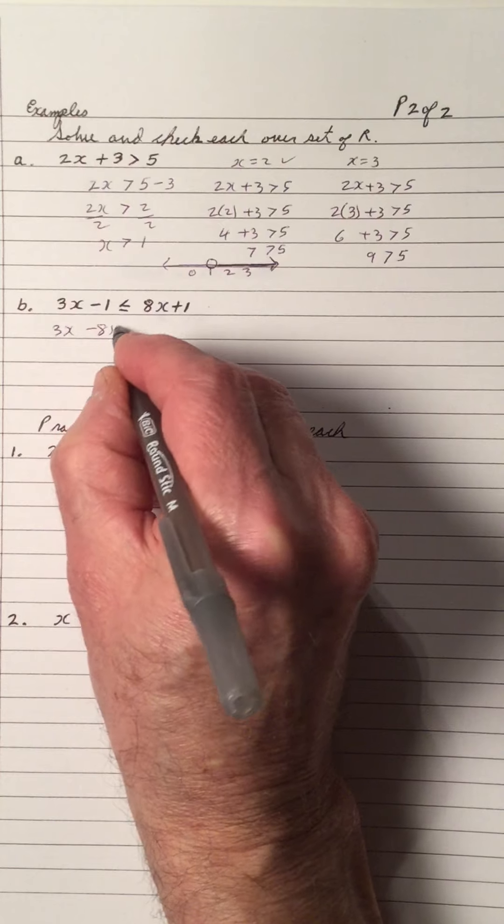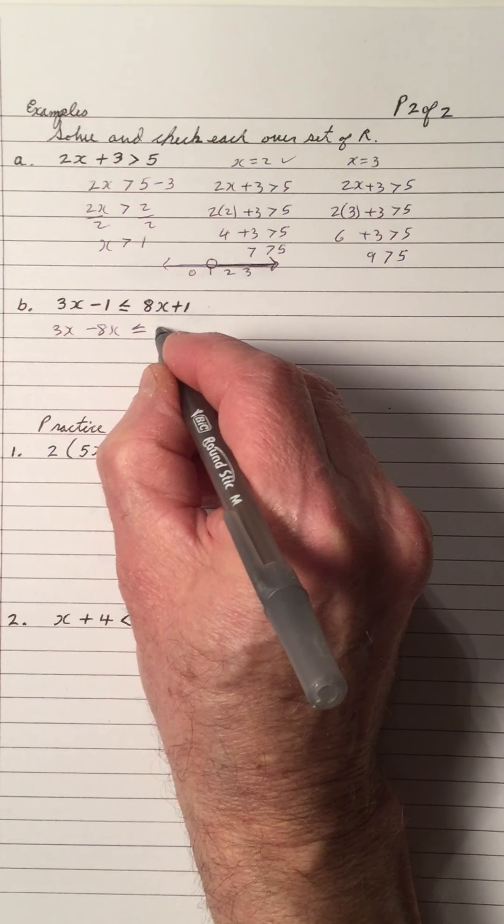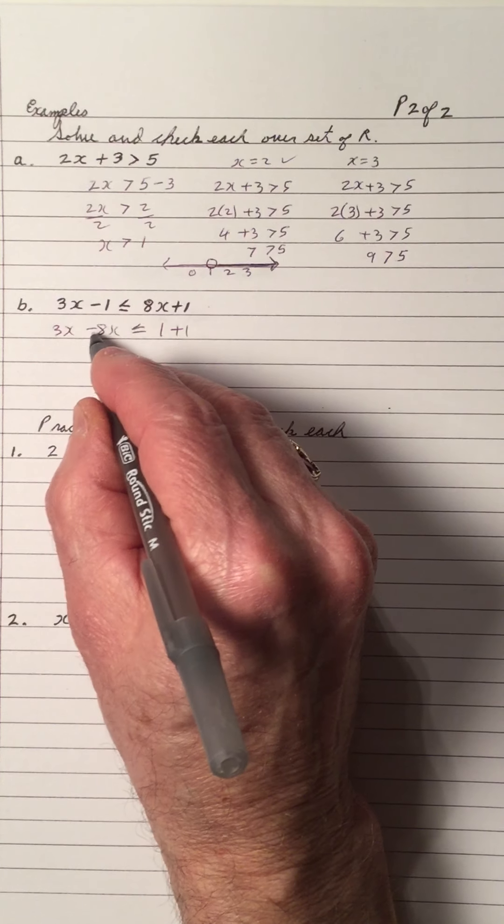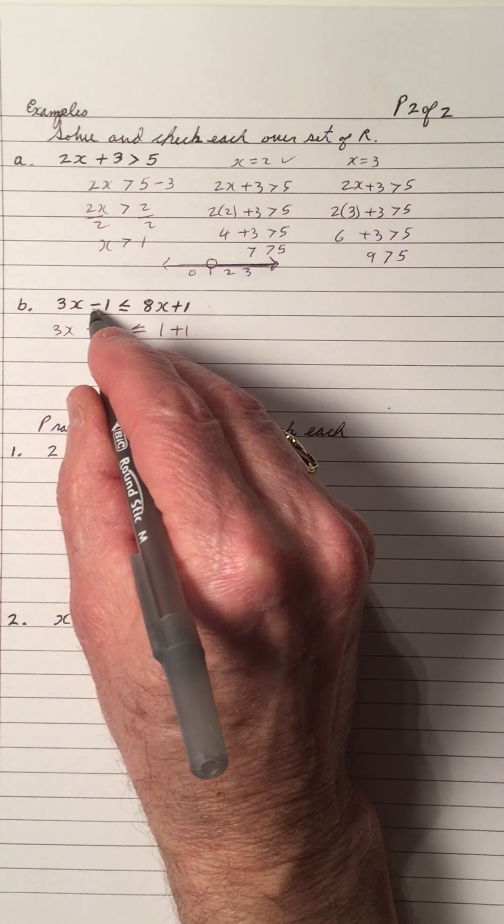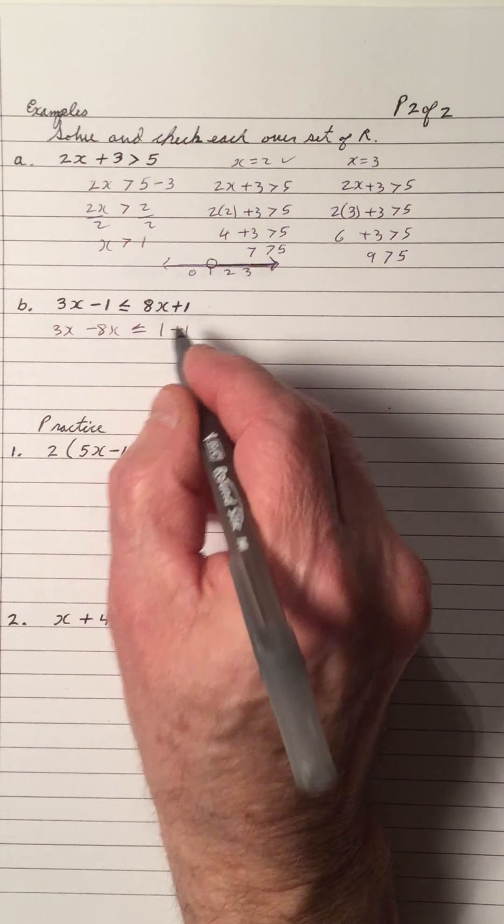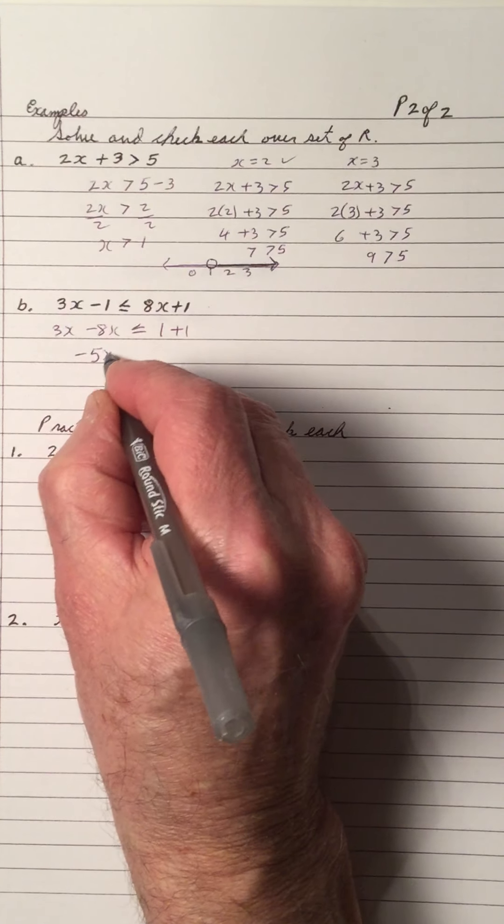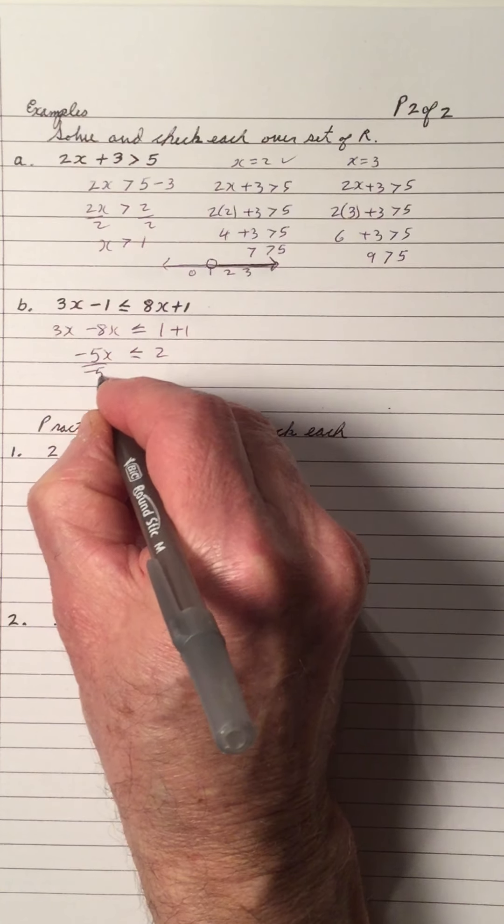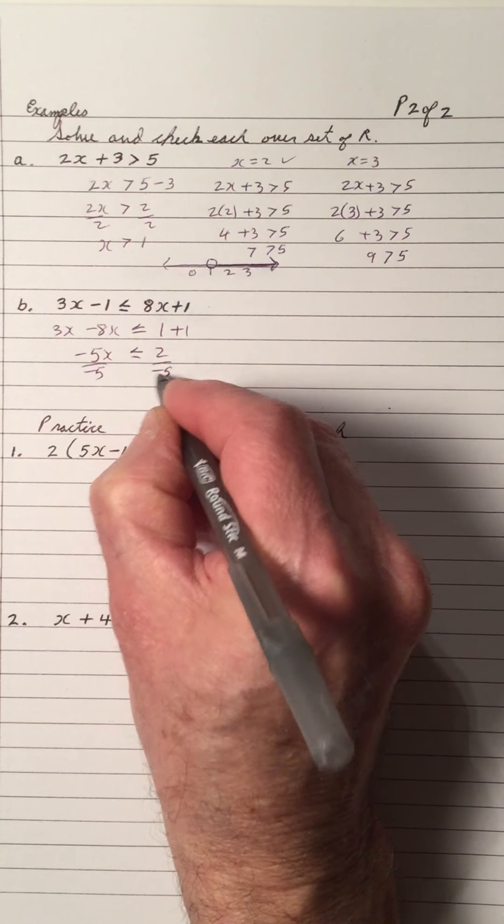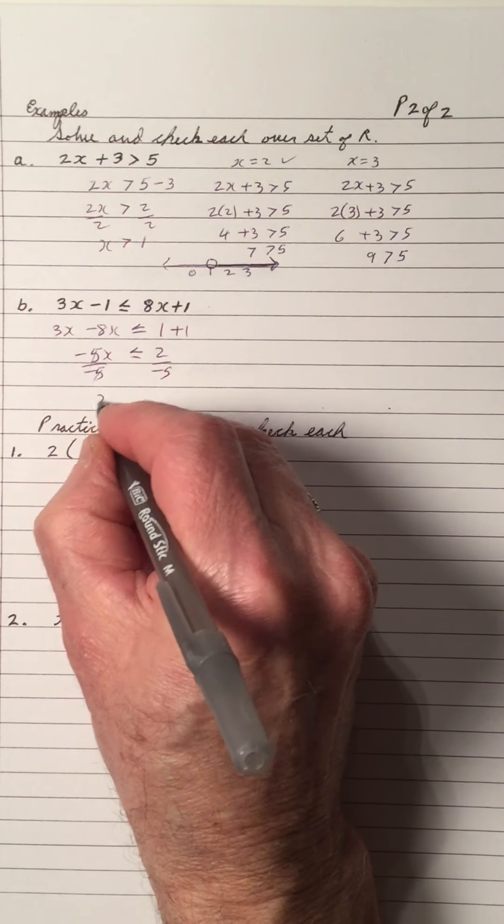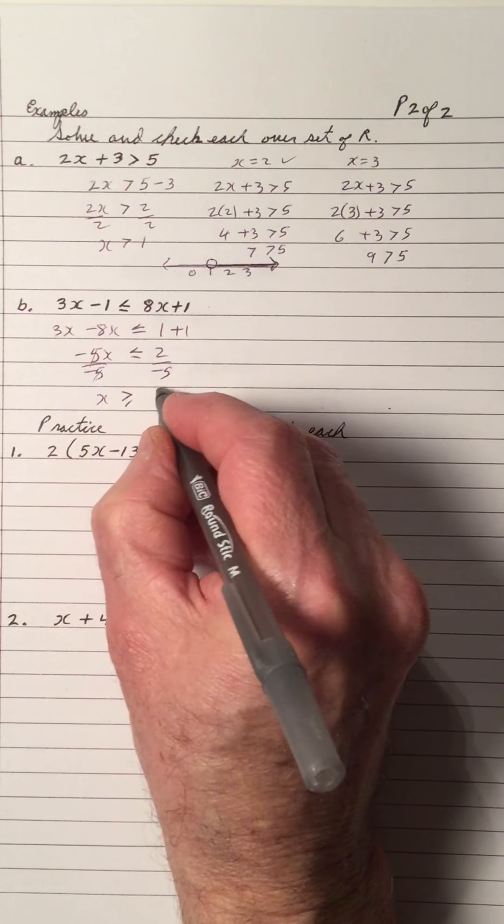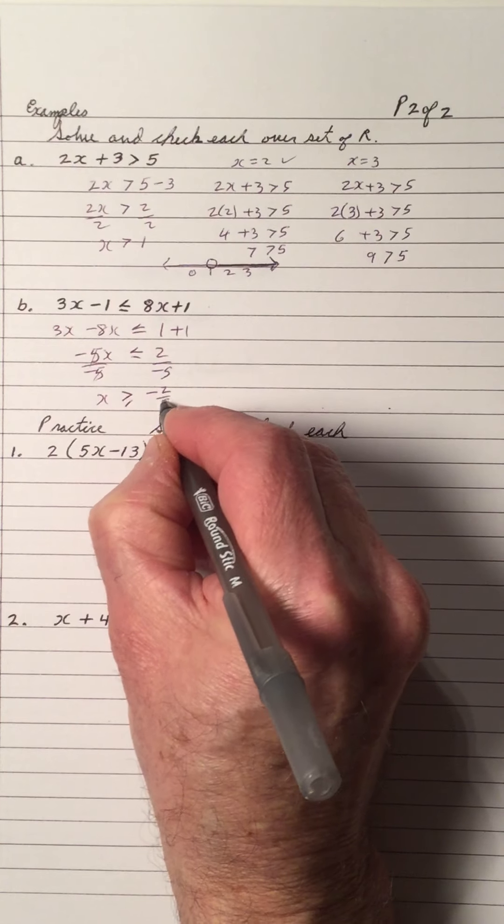3x minus 8x is less than or equal to 1 plus 1. So the plus 8x moves over, becomes a minus. The negative 1 moves to the right, becomes a plus. Negative 5x is less than or equal to 2. And we divide by negative 5 on each side. And the 5's cancel. We get x. And we divide by negative numbers, it becomes greater than or equal to negative 2 fifths.